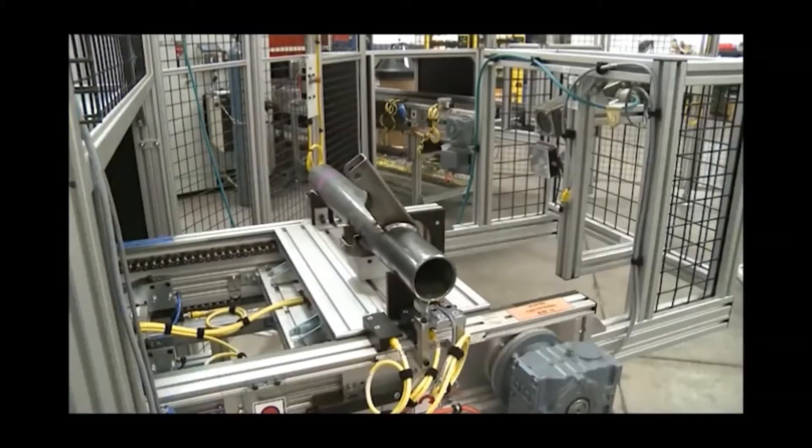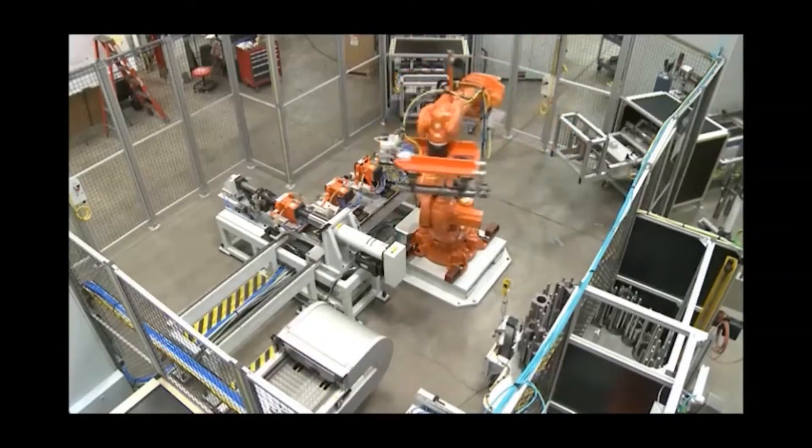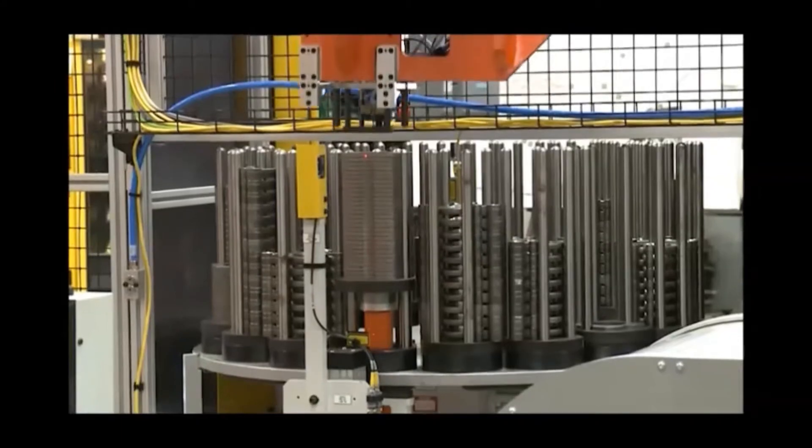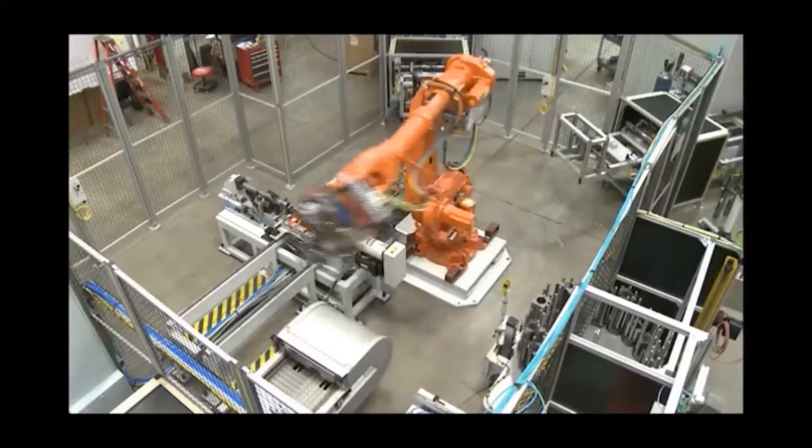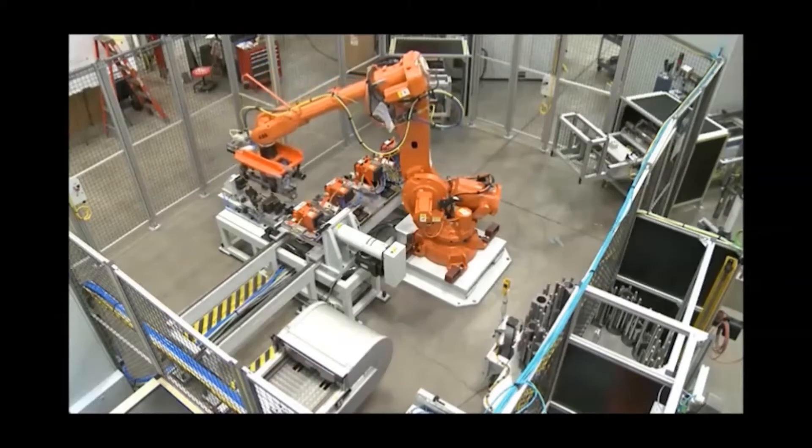The part is automatically conveyed out of the OP10 welding cell and enters the automatic flange press station. Then a material handling robot picks up the axle tube and also picks up the brake flange from the stack on the dial table. These two parts are placed into the flange press station.